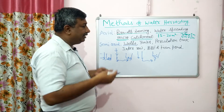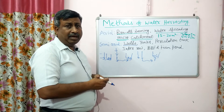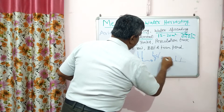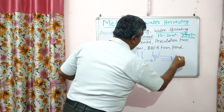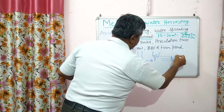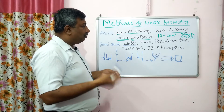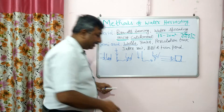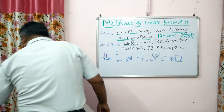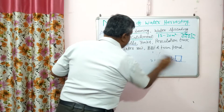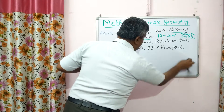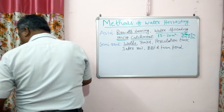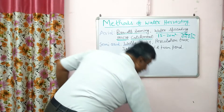Another method is tanks. Tanks are made in the field; water is carried by channels, the tanks are filled, and water is stored. This is also an old method. In the case of a percolation tank, it is slightly different from an ordinary tank. In an ordinary tank, the stored water is used for drinking, irrigation, or livestock.